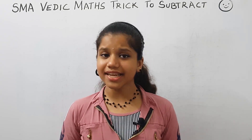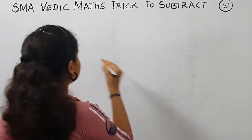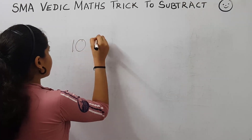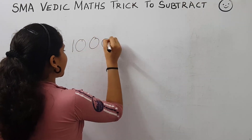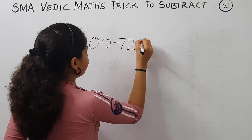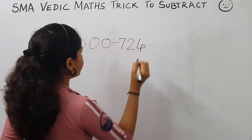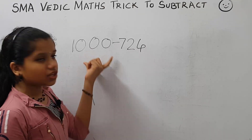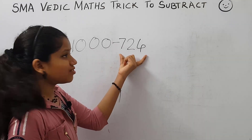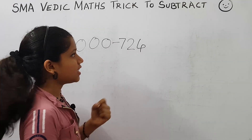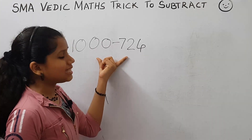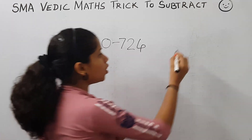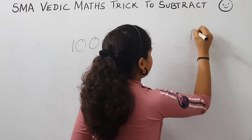What is the question? 1000 minus 724. Here, there are three zeros and three digits. So, to find the answer, we have to apply the rule: all from 9 and last from 10.